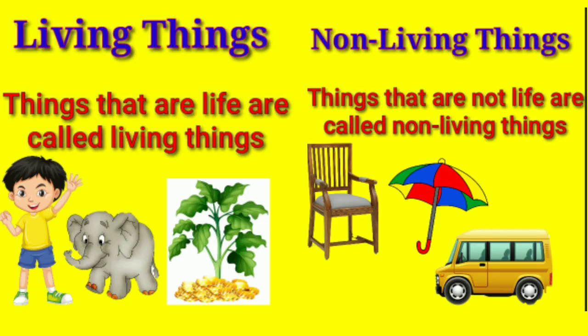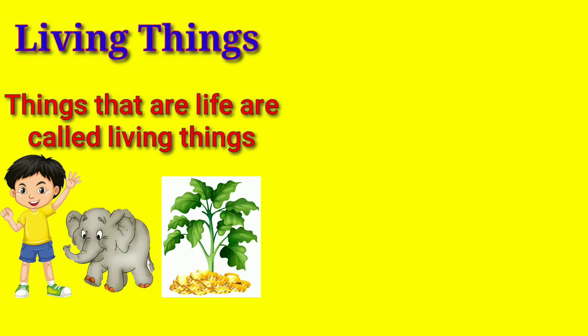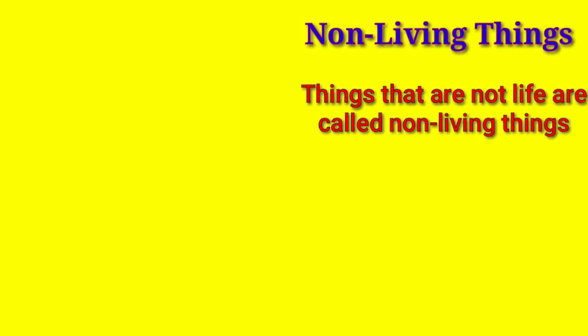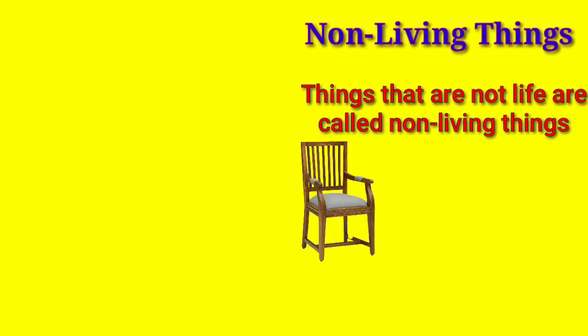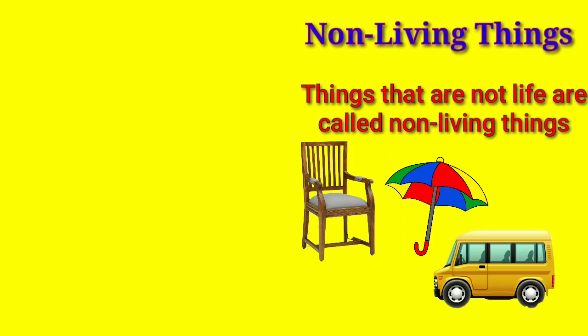We see many things around us. Some are living things and some are non-living things. Things that have life are called living things, like human beings, plants and animals. Things that do not have life are called non-living things, like chair, umbrella, bus and many more.